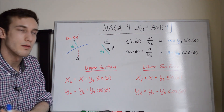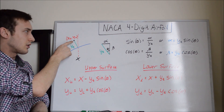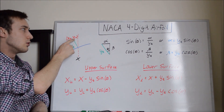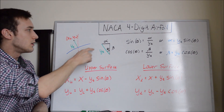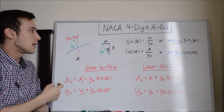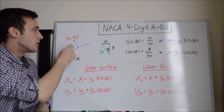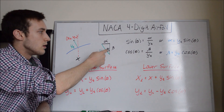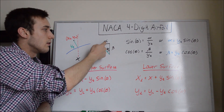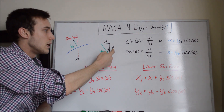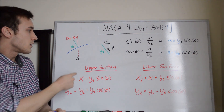Now that we have the mean camber line and thickness distribution, we can define the overall airfoil coordinates. For a point on the upper surface (X_U, Y_U) or lower surface (X_L, Y_L), we use the distances alpha and beta derived from trigonometry. Since the thickness is perpendicular to the camber line at angle theta, sine of theta equals alpha over Y_T and cosine of theta equals beta over Y_T, giving us expressions for alpha and beta in terms of Y_T and theta.